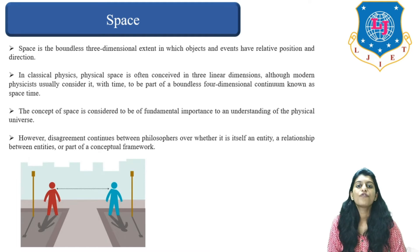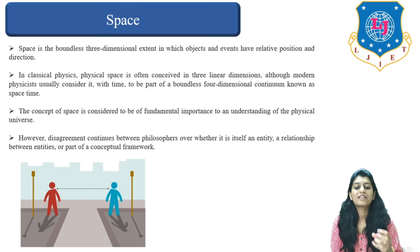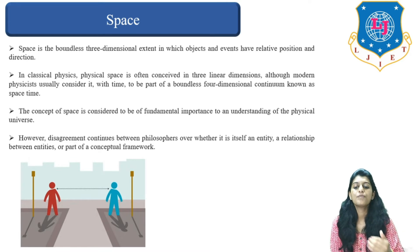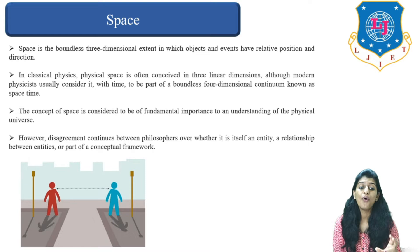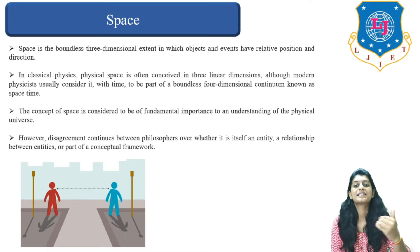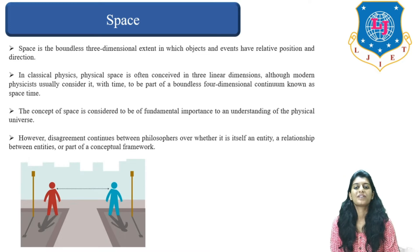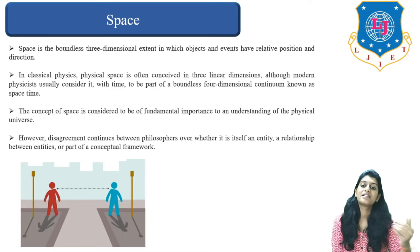In terms of classical physics, physical space is often conceived in three linear dimensions. Although in terms of modern physics, it is defined as a part of a boundless four-dimensional continuum, known as space-time. So there is a difference between what is space and what is space-time. If you look at this picture here, two persons are standing at some particular distance, and that distance is known as the space between them.